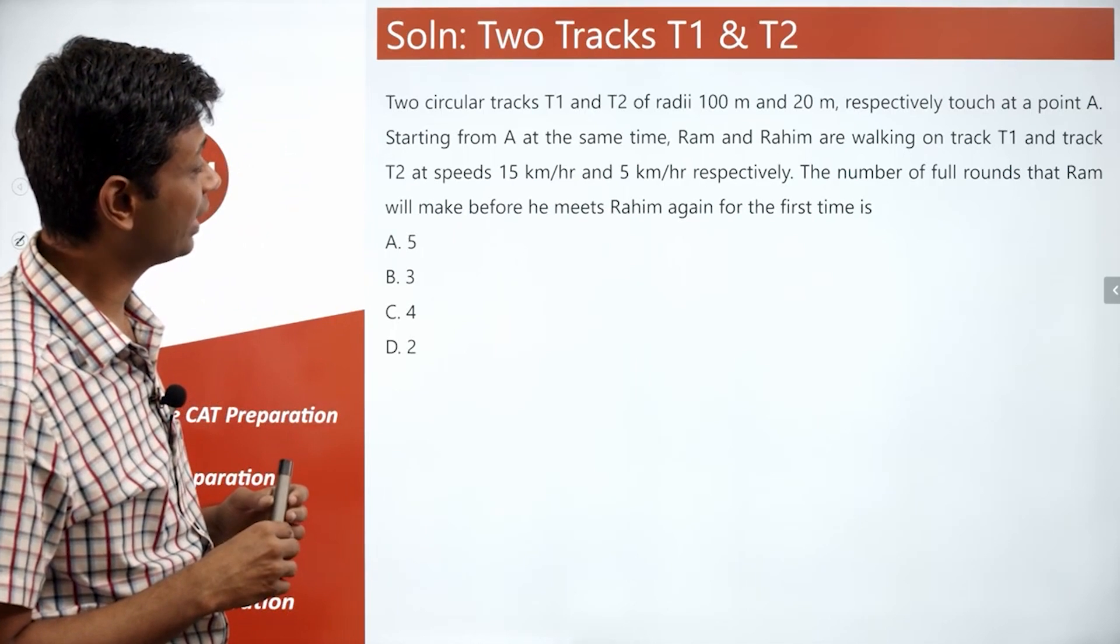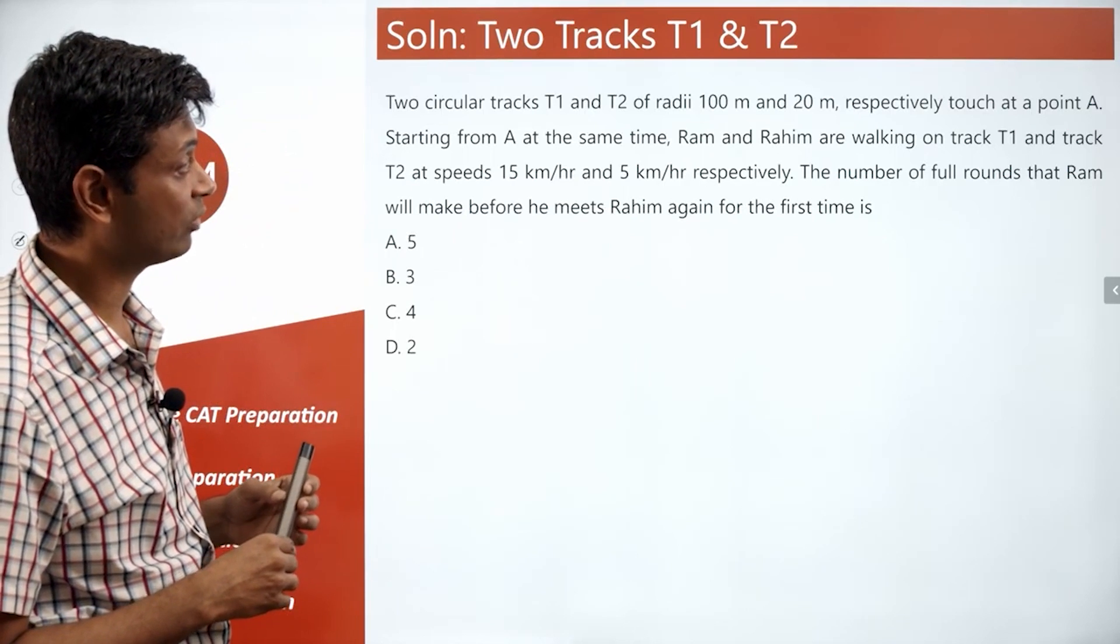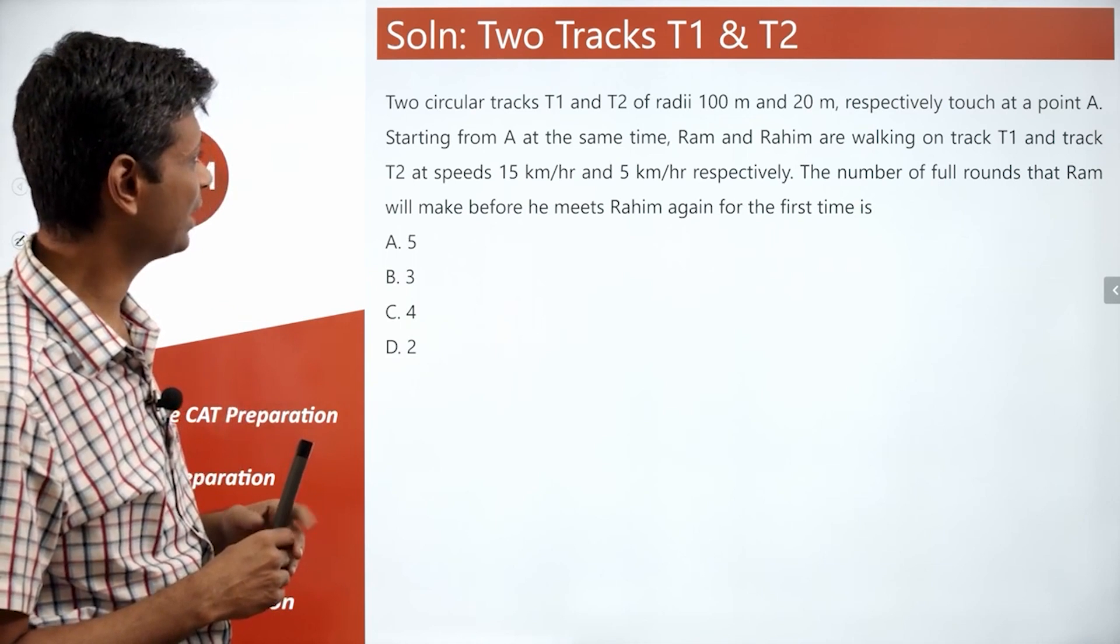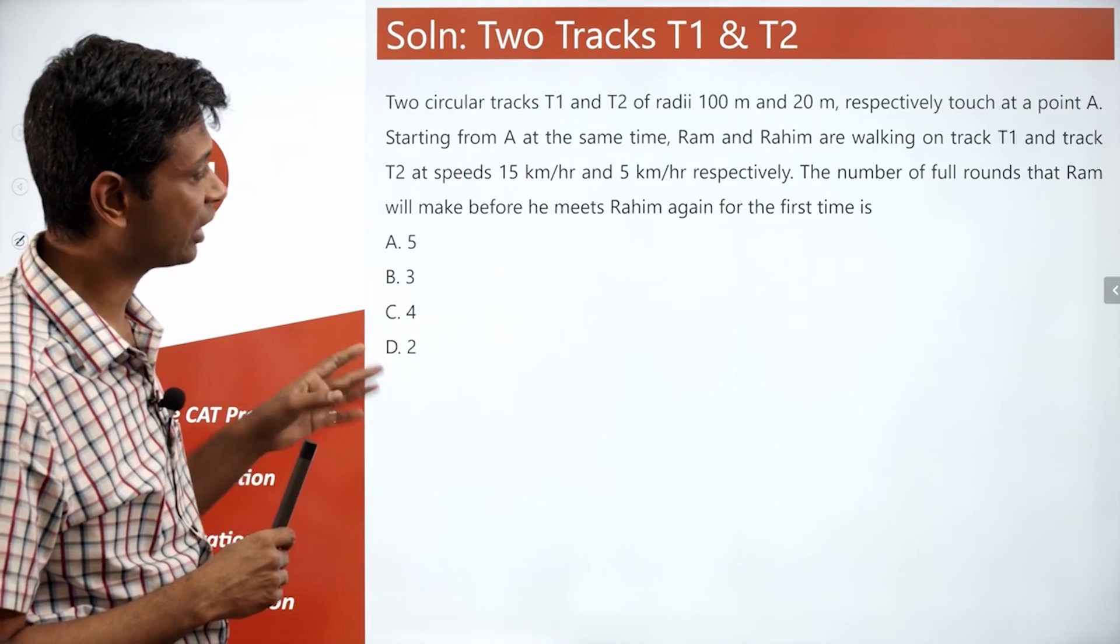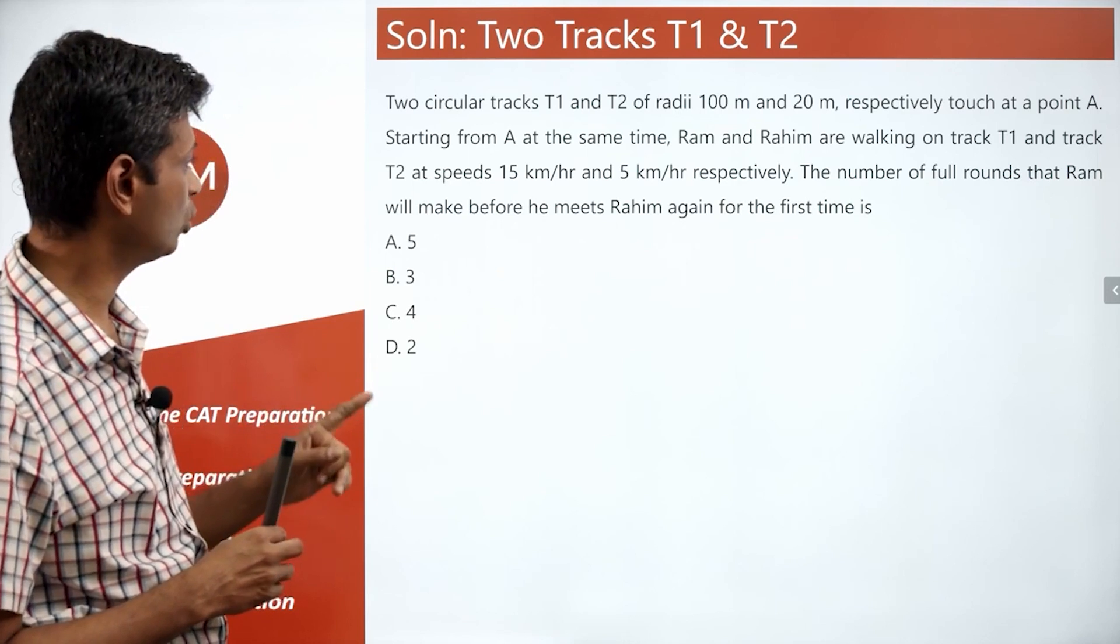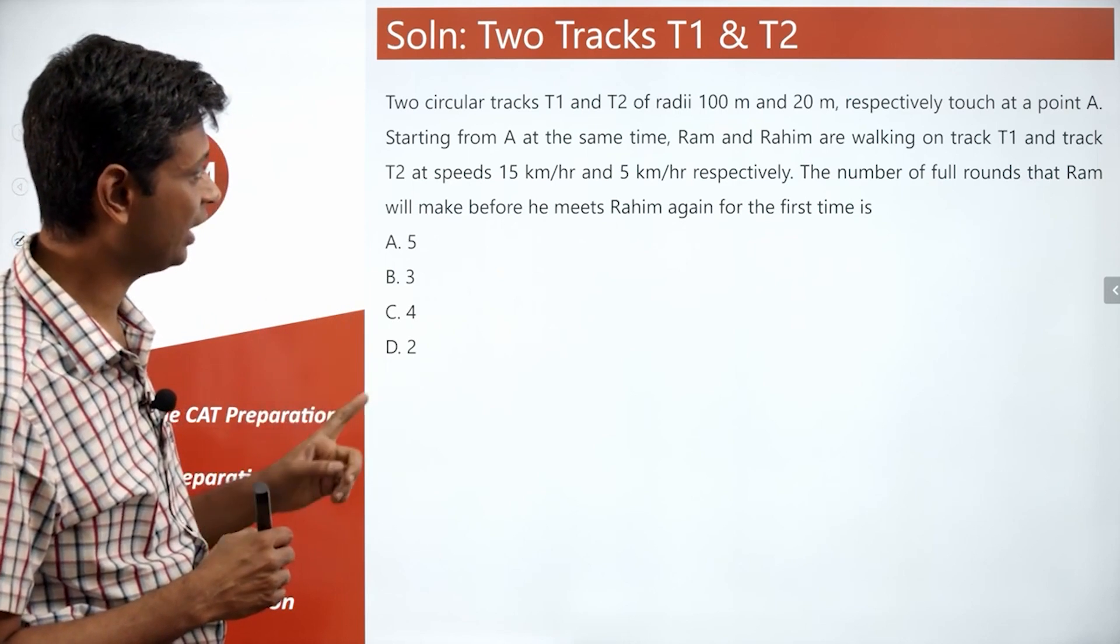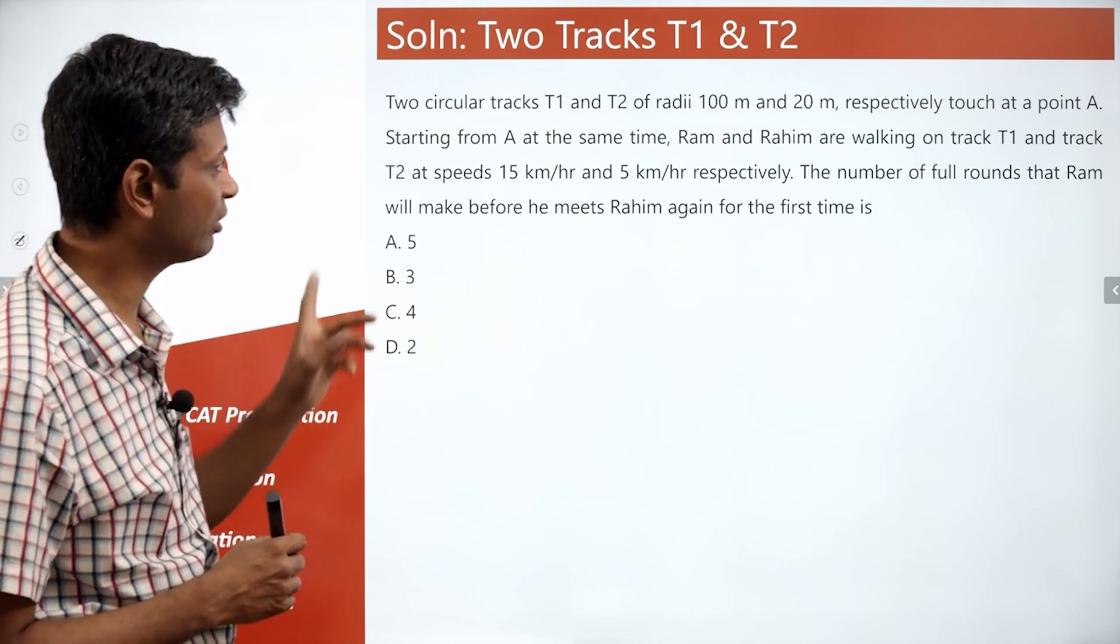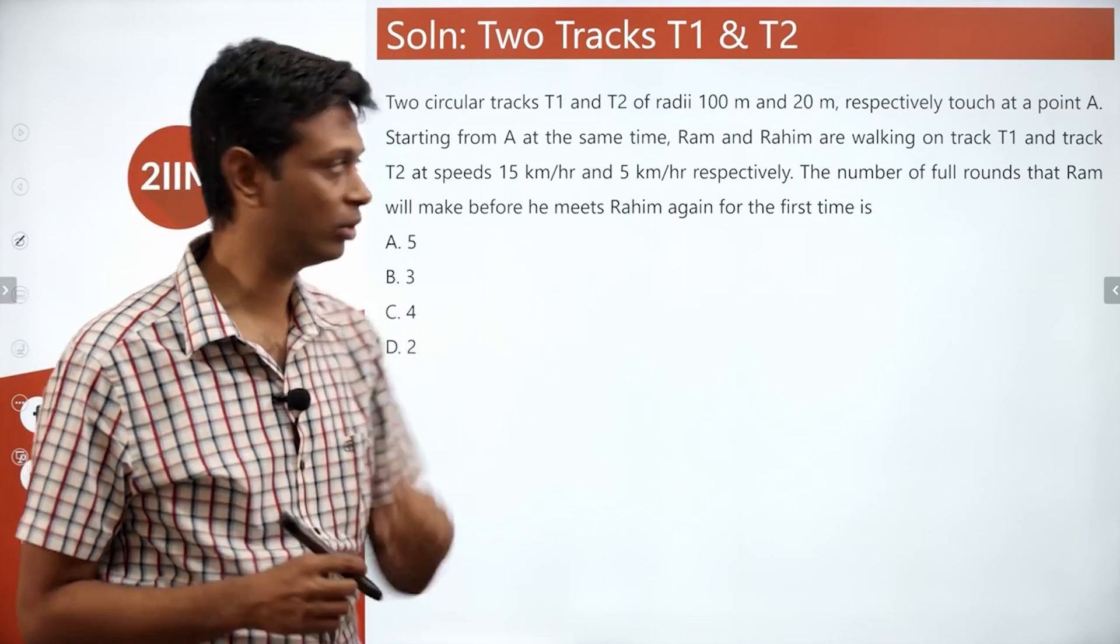Two circular tracks T1 and T2 of radii 100 meters and 20 meters respectively touch at a point A. Starting from A at the same time, Ram and Rahim are walking on track 1 and track 2 at speeds of 15 and 5 respectively. The number of full rounds that Ram will make before he meets Rahim again for the first time is.